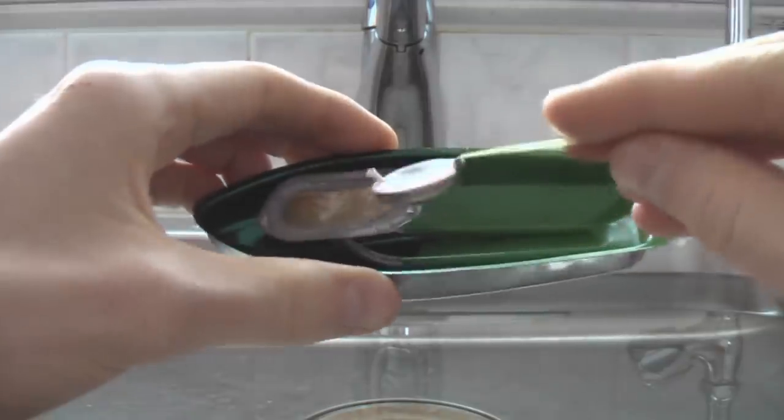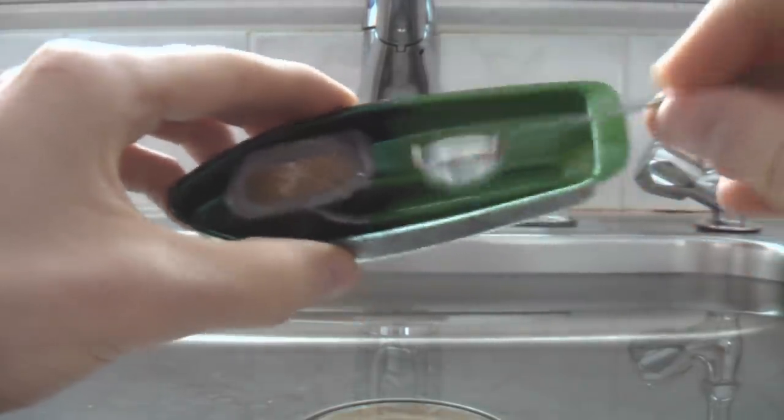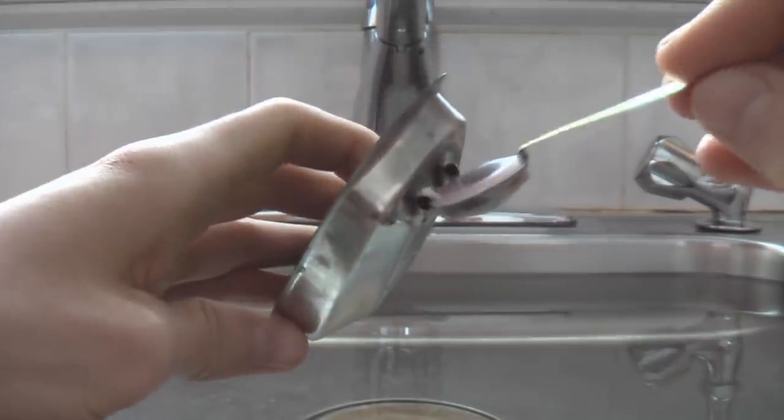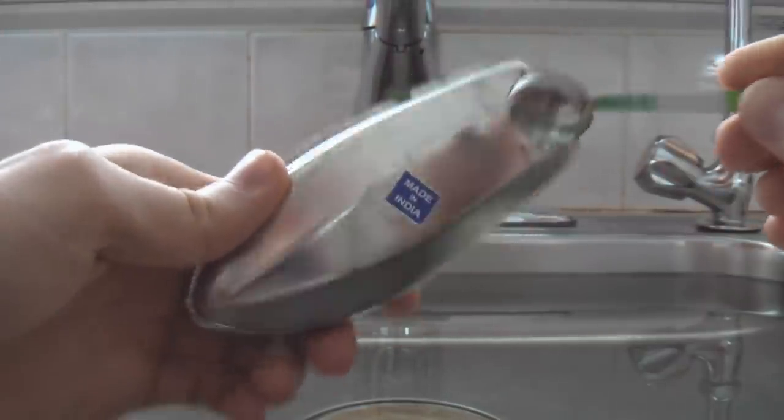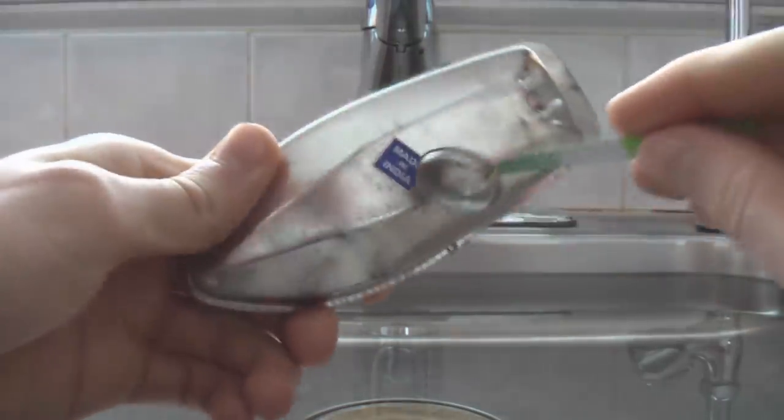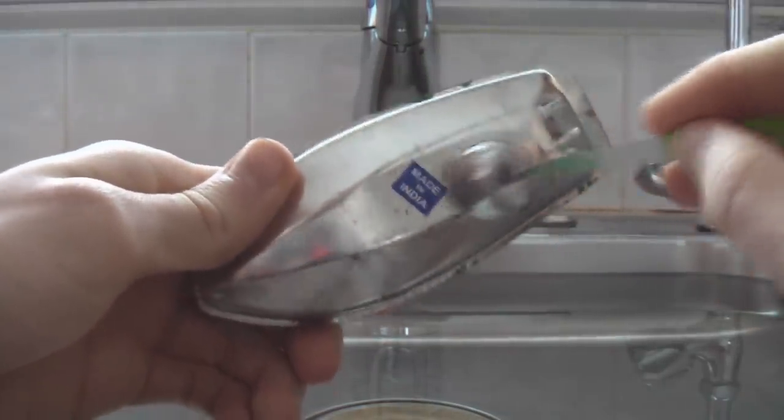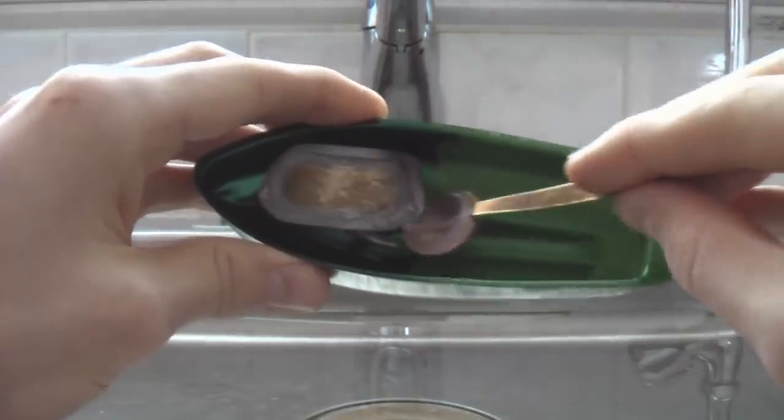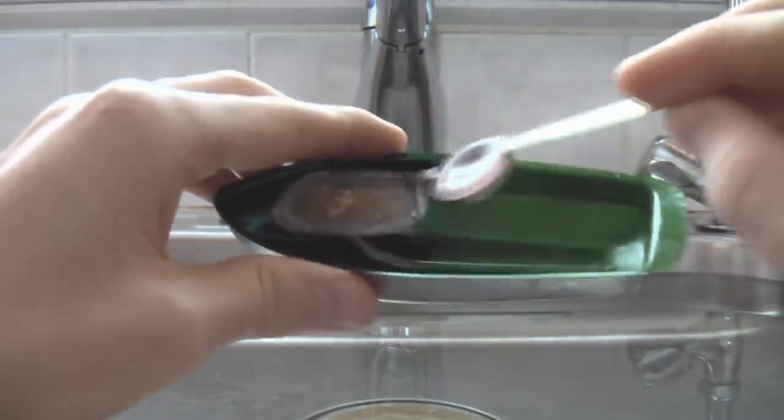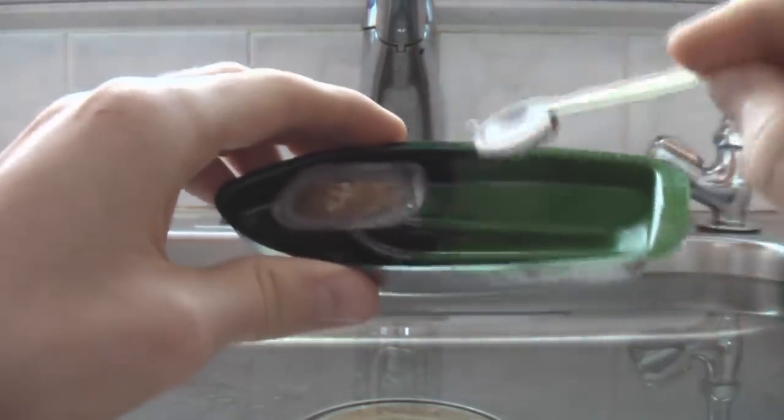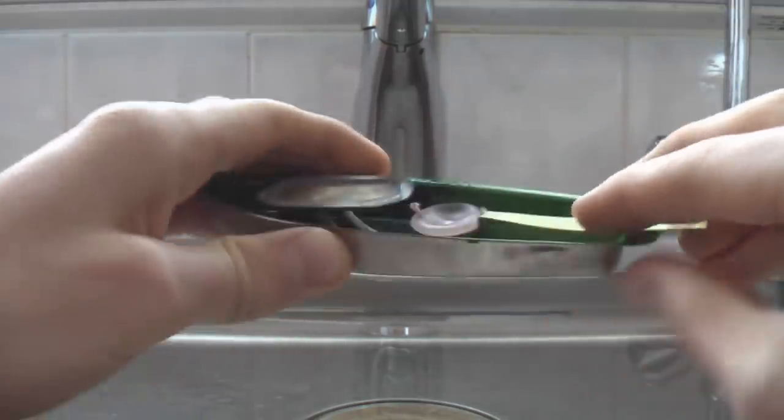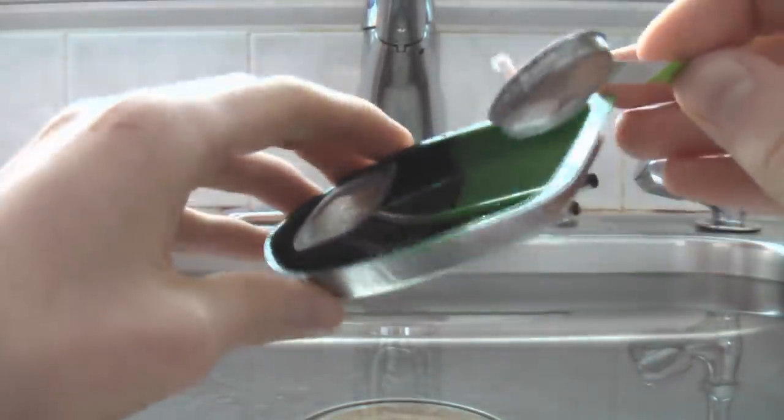But then what happens is these tubes you'll see are resting along the bottom of the boat here. The cooler water that's resting along the bottom of the boat cools down the steam and the steam condenses back into water which gets sucked back up into the boiler and then the whole process just happens over and over again. So yeah, that's how they work.